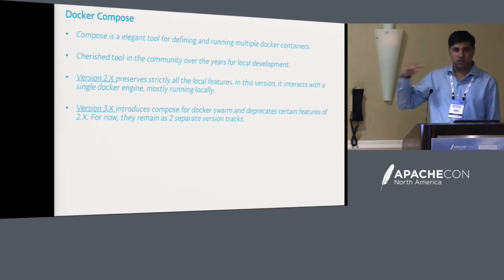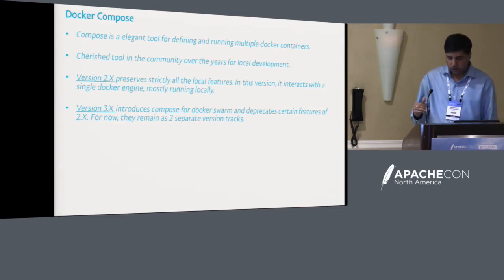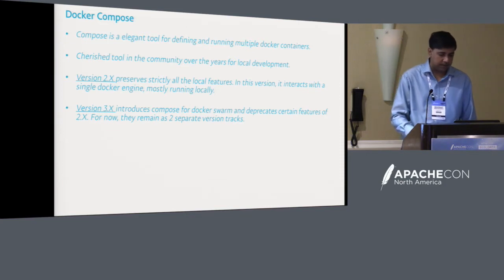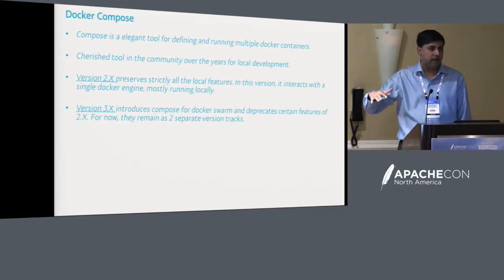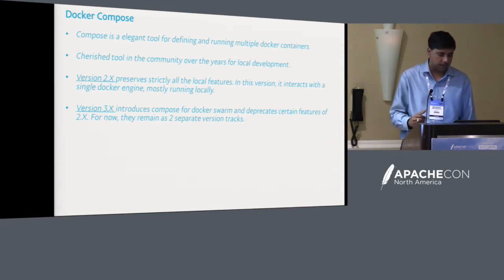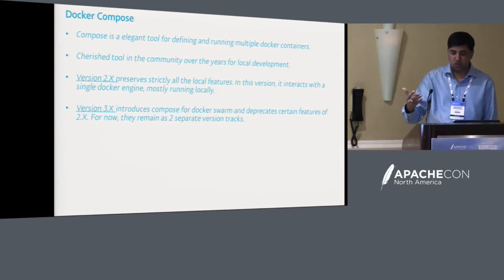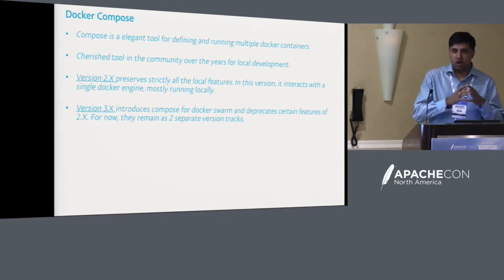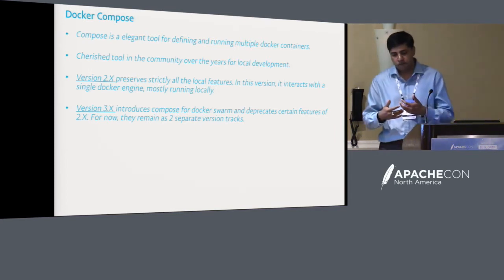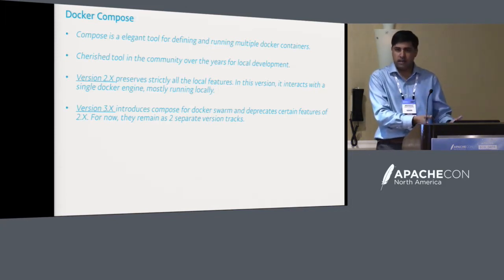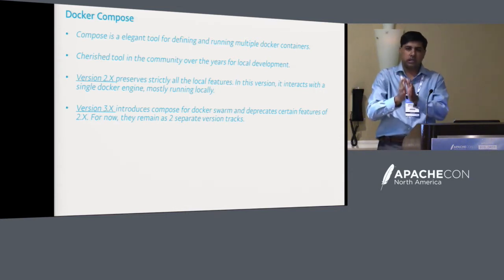Compose has been in the community for a long time — it used to be called Fig, Docker acquired the team, and it became Compose. It provides a specification for running containers through a YAML file, so you don't have to remember all the Docker run options. It has ordering primitives and other semantics, and you can both specify and run through the command line. Compose has always interacted with a single Docker engine, launching all containers against one engine.